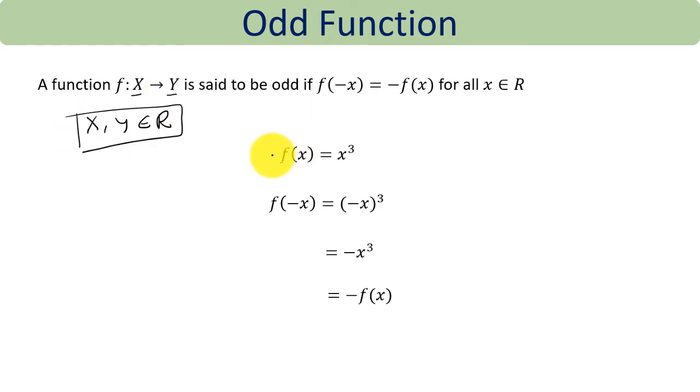Let us check if f(x) = x³ is odd or not. This is what we are going to do: replace x with negative x in this function and see what happens. If we substitute negative x, we get (-x)³, and since this is an odd exponent, we can write